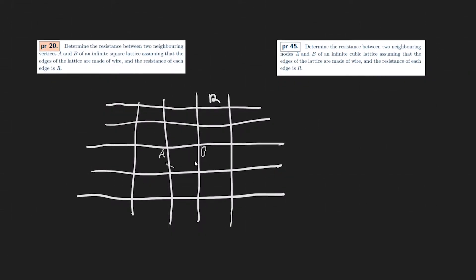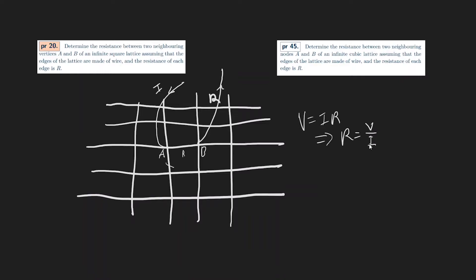Let's let that be A and this be B, with the resistance R between them — it's not going to be just R because we have to deal with all these other resistors. For that, we have to drive in a current and drive out a current. Basically you drive a current I in at A and take the current I out at B. Using this current, you can find the voltage between these two vertices. If you know that voltage, V equals IR implies R equals V over I.